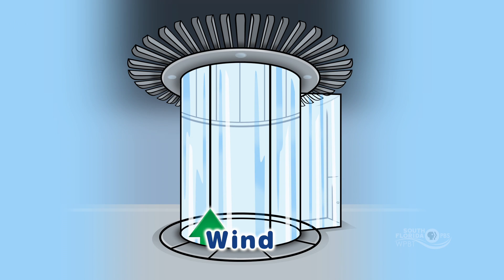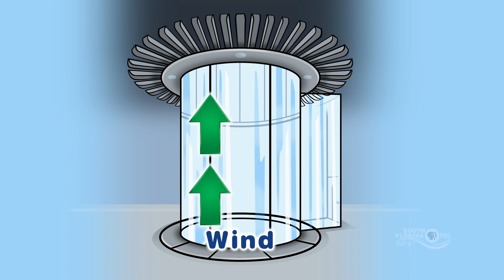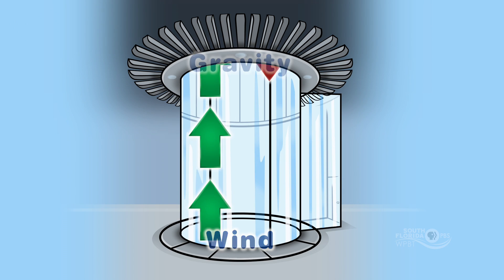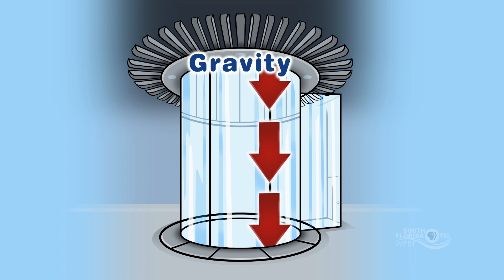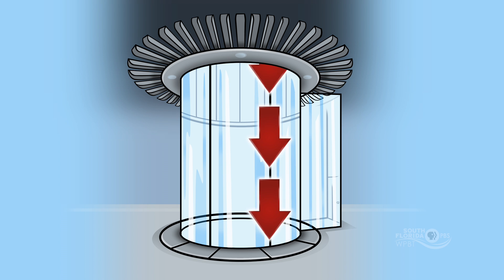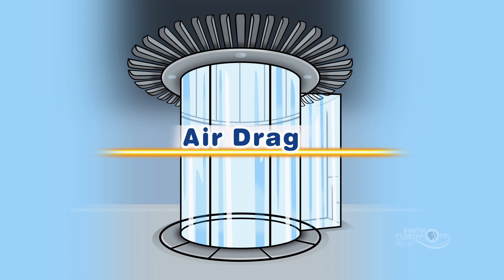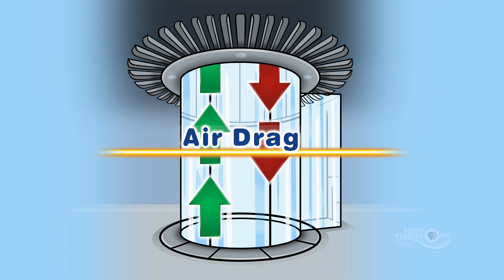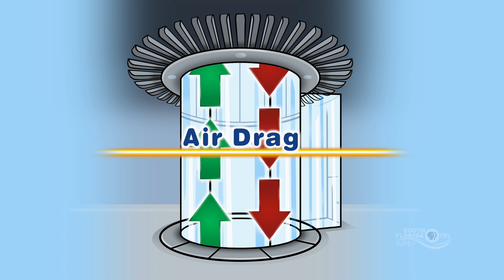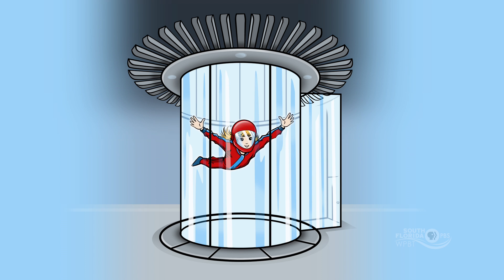The wind tunnel forces air to move vertically up from the bottom. Gravity is the Earth's force that pulls objects down so they stay on the ground. Air drag happens when a person or object is held between the wind force moving up and the gravity force pulling down. That is what enables flight.